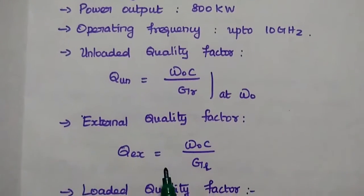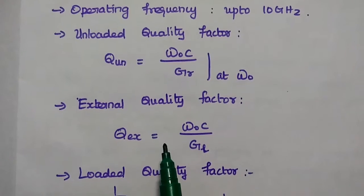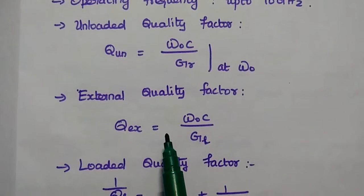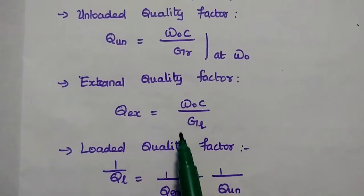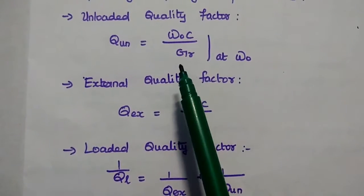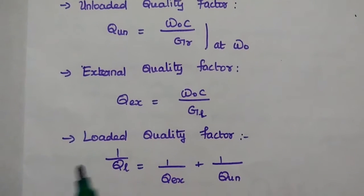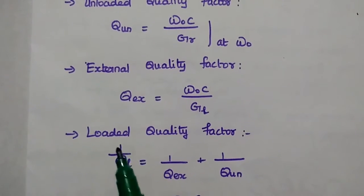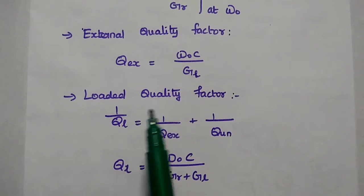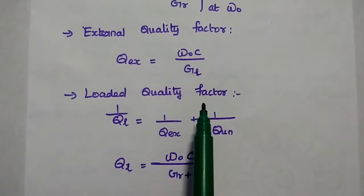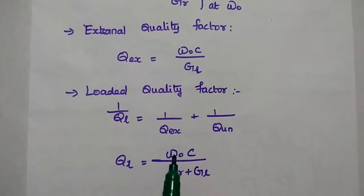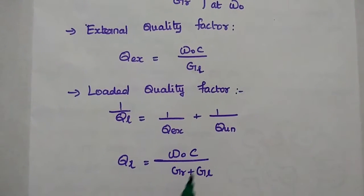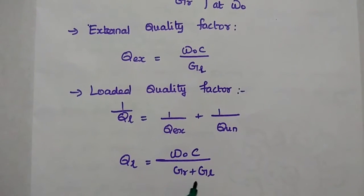The characteristics of the magnetron include very high efficiency of about 40 to 70 percent and high output power of 80 kilowatts. Its operating frequency range is up to 10 gigahertz. The unloaded quality factor is ω₀C divided by G_R, the external quality factor is ω₀C divided by G_L (conductance of the load), and the loaded quality factor is ω₀C divided by (G_R plus G_L).